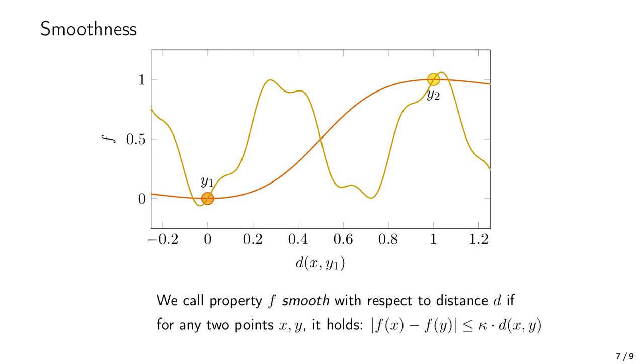To be more precise, we say that the property f is smooth with respect to distance d if, for any two points x and y, the f values f(x) and f(y) are at most as different as their distance d(x,y) multiplied by some constant kappa. For the experts among you, this is actually the Lipschitz definition of smoothness, and it's a pretty strict form of smoothness. But for our purposes here, it's the most intuitive definition, I think.